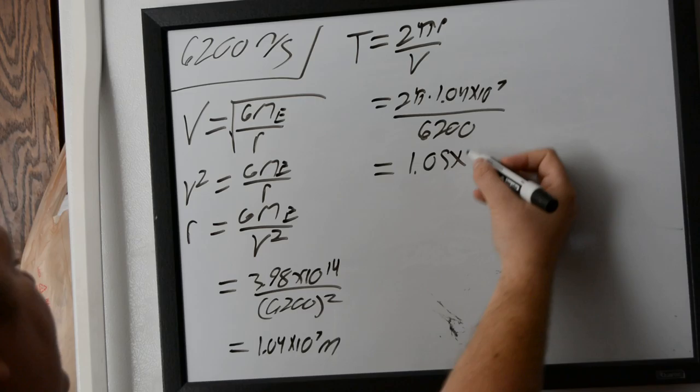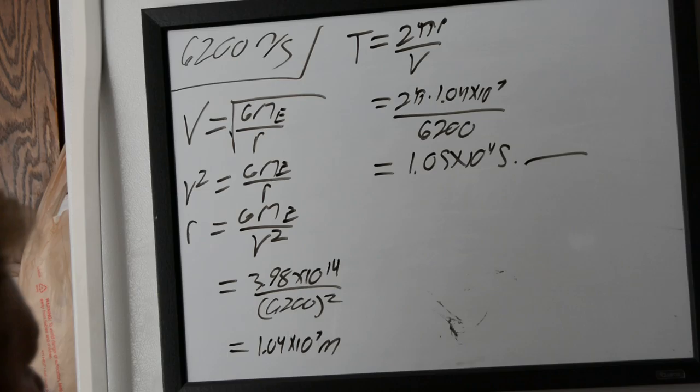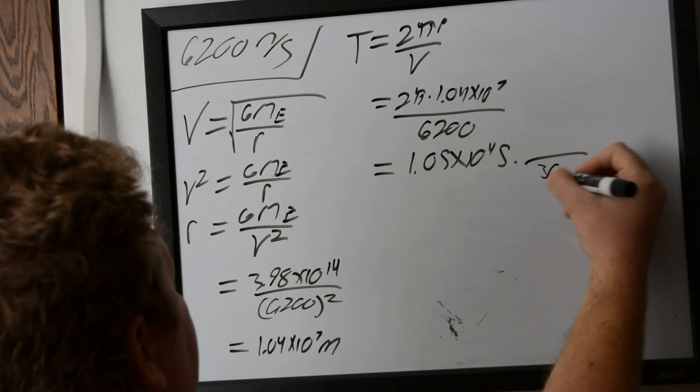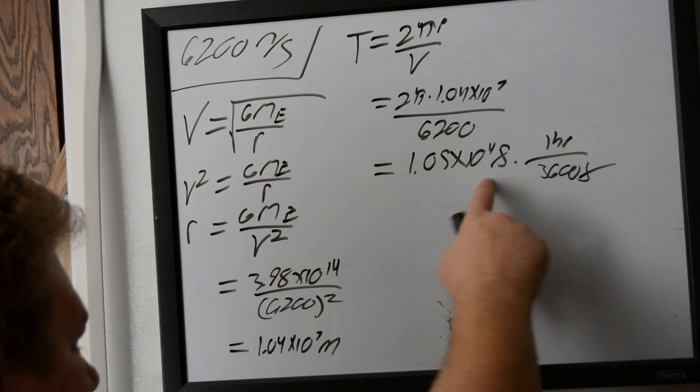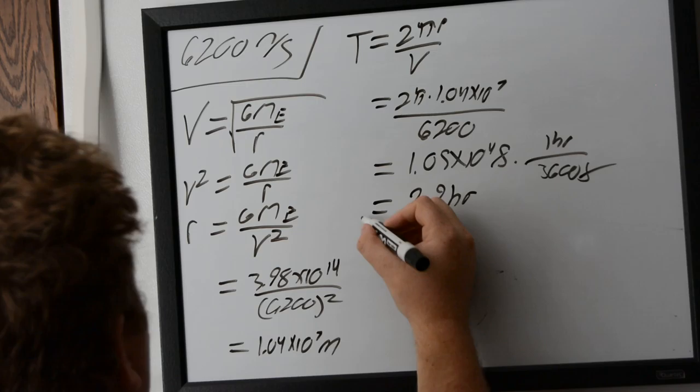and that comes out to be 1.05 × 10^4 seconds. And as always, we actually want that to be in hours. So we just take 3600 seconds in one hour. That'll cancel out our seconds, and we have hours. That will give us 2.9 hours.